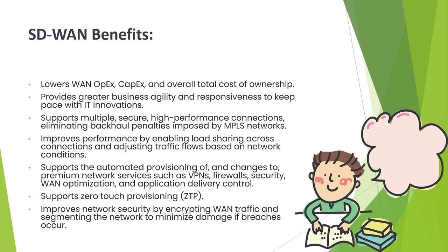If there is some outage in the network, there could be huge penalties imposed by customers. In the case of SD-WAN, if there is a problem with one of the network paths, automatically another network path will be selected and it won't affect the customer experience. SD-WAN also improves performance by enabling load sharing across multiple connections and can adjust traffic flows based on network conditions. If a certain network element's condition is not as per the service agreement, then automatically a second network path can be chosen.